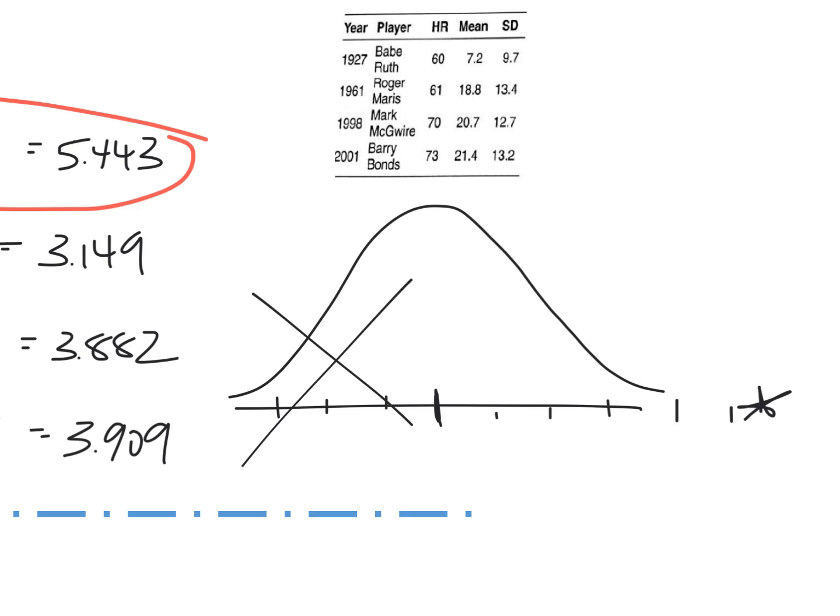And so that's again why the empirical rule is 99.7% of the data is between three standard deviations, because occasionally there's going to be a dude way out here. Or on the other side, just keep that in mind, that's why it's not always 100% of the data within three standard deviations.